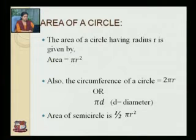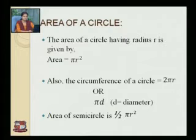The area of a semicircle is half the area of the circle, which is equal to half pi r squared.